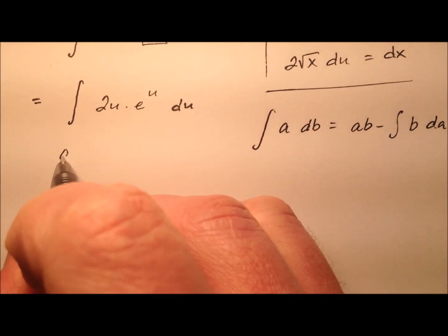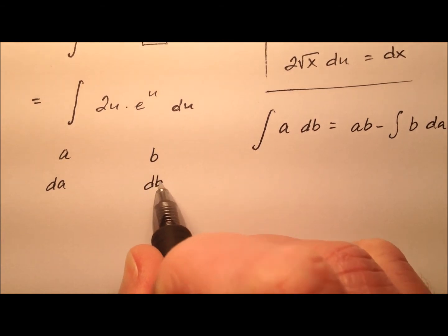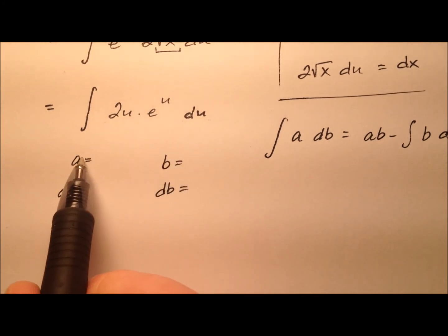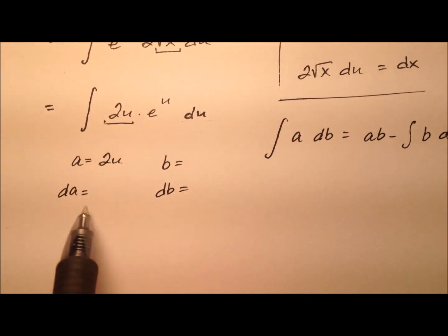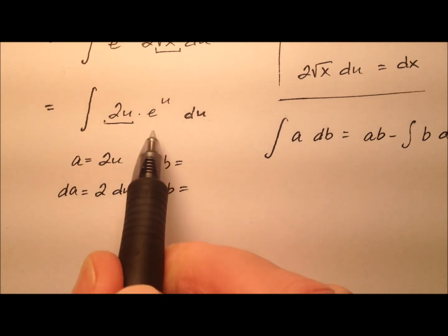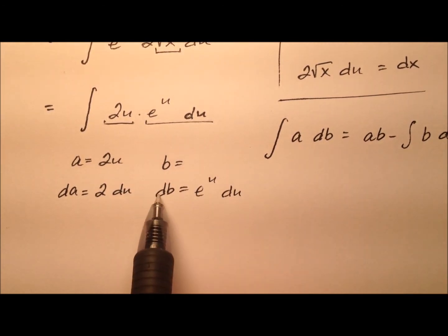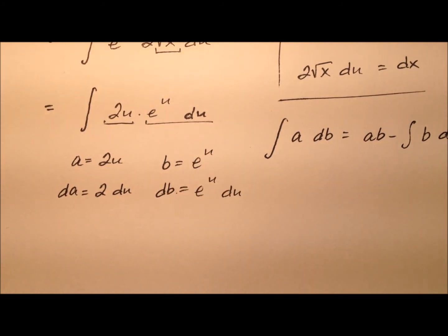Got everything set up here. Okay, so what would be good? Well, remember we're going to differentiate a so that looks like 2u would be a great candidate because the derivative is just 2 du. And so that means the leftovers, this e to the u du will be our db, which means when I integrate, I'll just have e to the u.